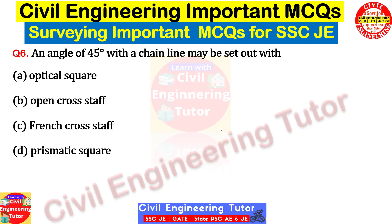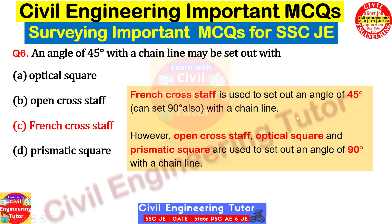Question number six: an angle of 45 degrees with a chain line may be set out with — options are optical square, open cross staff, French cross staff, or prismatic square. The correct answer is the French cross staff. The French cross staff is used for setting both 45-degree and 90-degree angles, whereas optical square, open cross staff, and prismatic square are used only to set 90-degree angles.